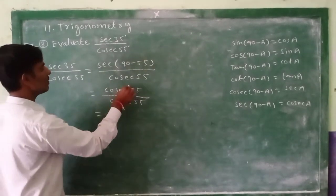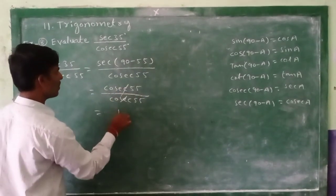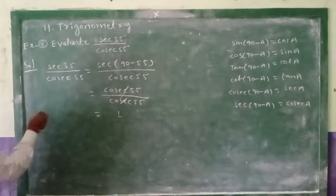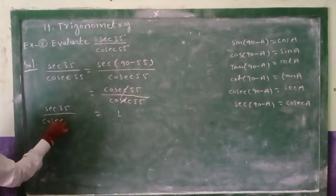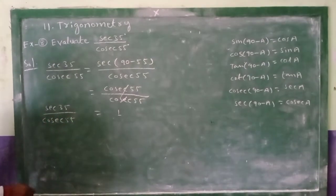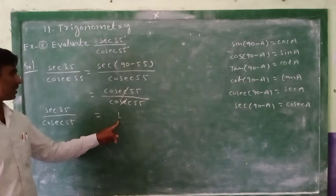Both are the same. One by one means 1. So secant 35 by cosecant 55 degrees equals 1.